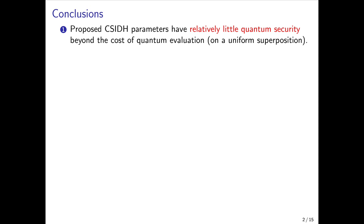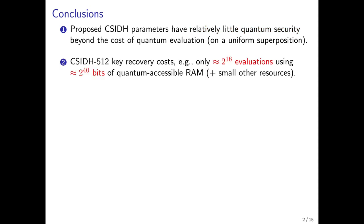The main conclusion for this work is that the proposed parameters of CSIDH offer relatively little post-quantum security beyond what's given by simply the cost of quantumly evaluating the function itself on a uniform superposition. For example, for the main parameterization CSIDH-512, key recovery costs only about 2^16 quantum evaluations of the function using about 2^40 bits, that is 128 gigabytes, of classical RAM which is quantumly accessible.